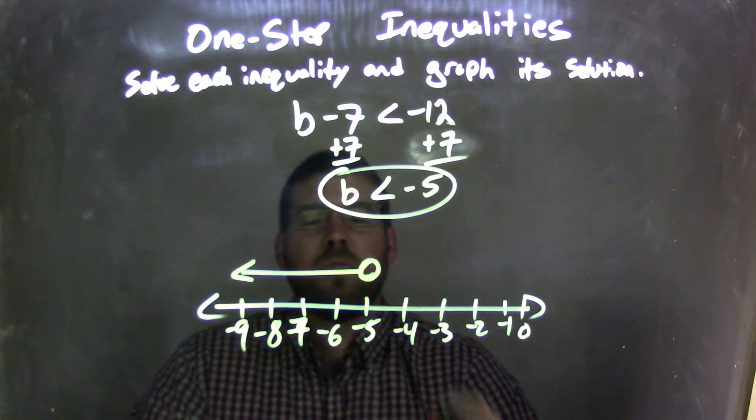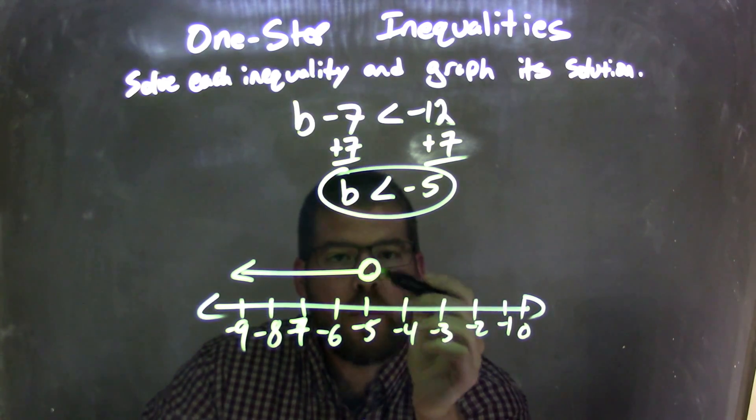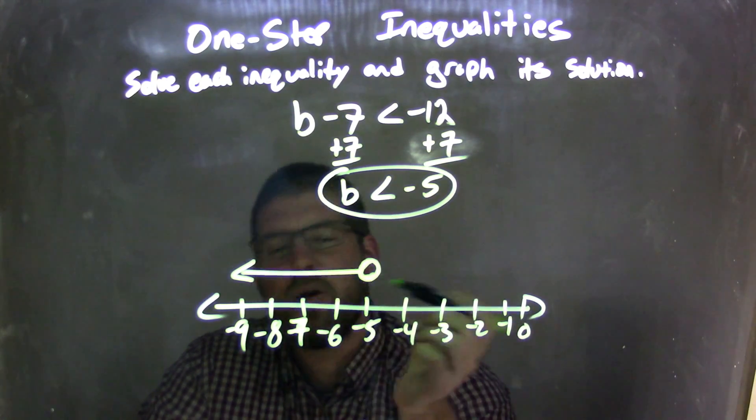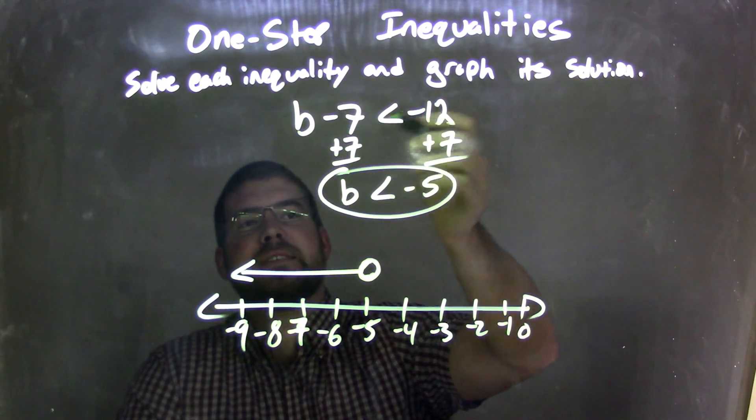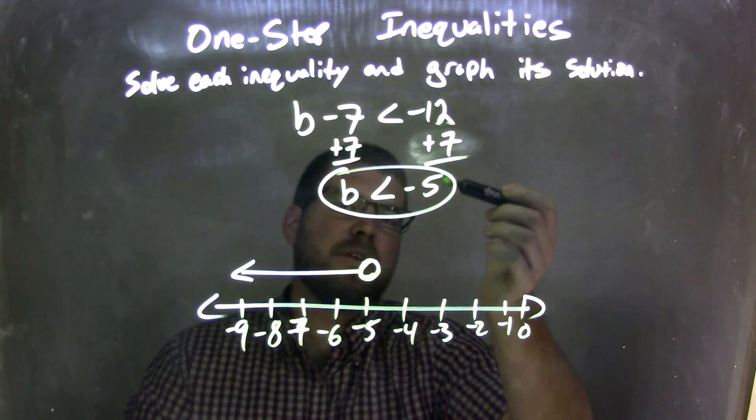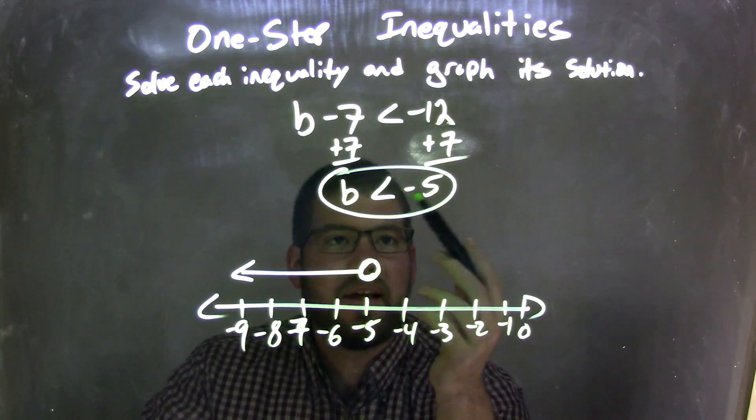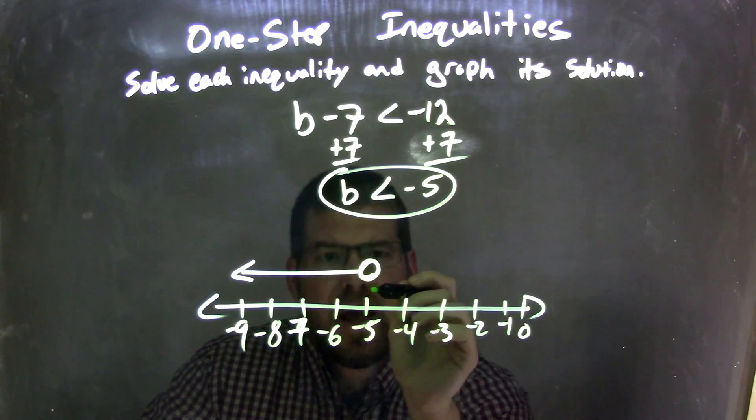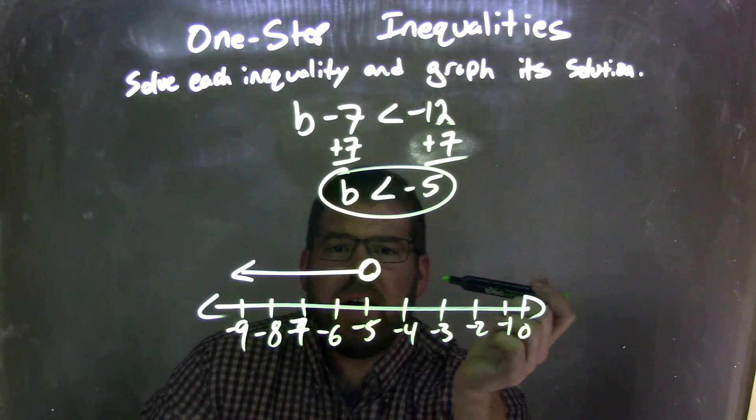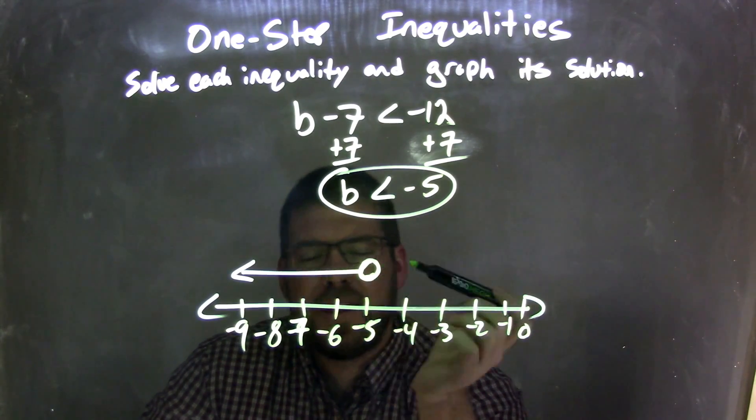And there we are. We have b is less than negative 5, an open circle at negative 5, and the arrow went to the left. So as a recap, I was given my initial inequality of b minus 7 is less than negative 12. I added 7 to both sides, giving b is less than negative 5. From there I graphed it, put an open circle because it's just less than at negative 5, and the less than makes the arrow go to the left, down to the negative. And so this graph matches my final answer of b is less than negative 5.